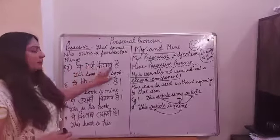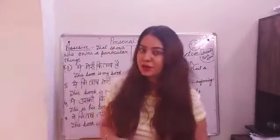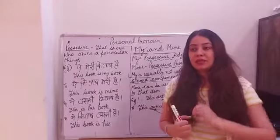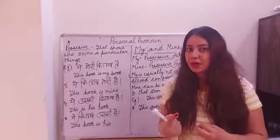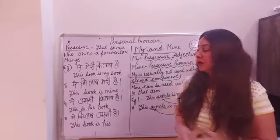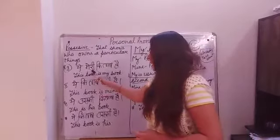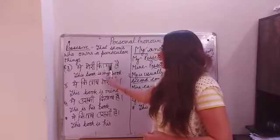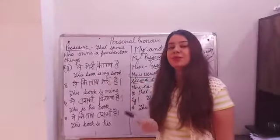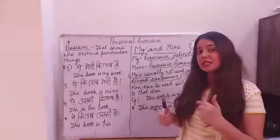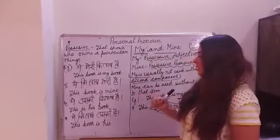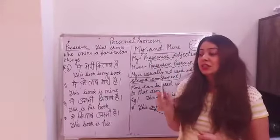For example: 'This is my book.' Here, 'my' is followed by the noun 'book', which is the required second component. You can also say 'This book is mine', where 'mine' stands alone without needing another noun after it. Both sentences are correct, but they are structured differently.